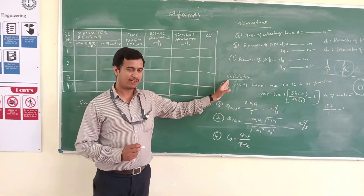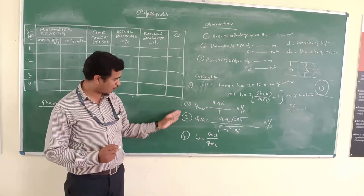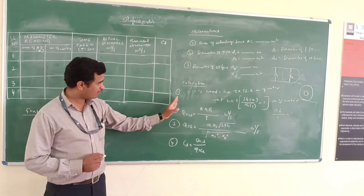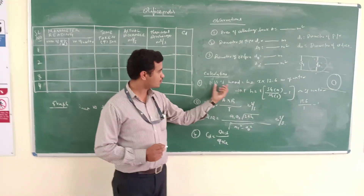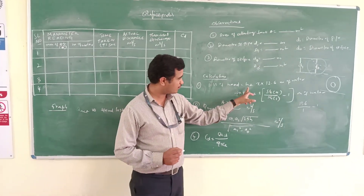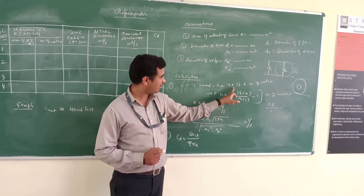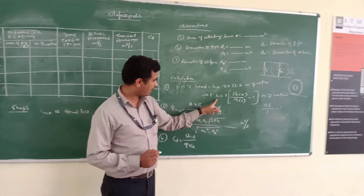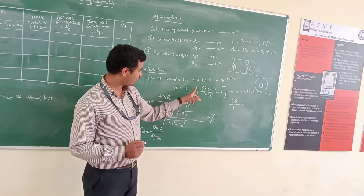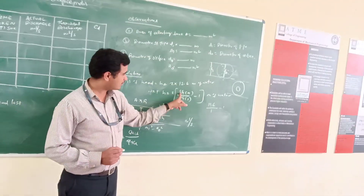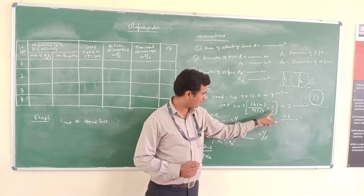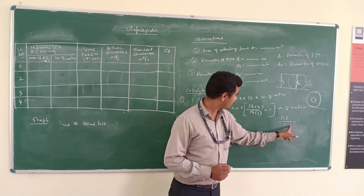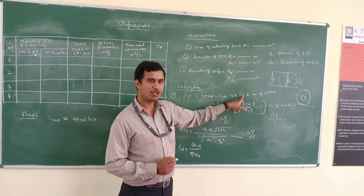The next one will be the calculation. In the calculation, we always have to follow the same procedure step by step. The first step is always to take the loss of head. The loss of head h will be equal to x into 12.6 meters of water. We know that h is equal to x multiplied by the specific gravity of mercury divided by the specific gravity of water, minus 1 — that gives 13.6 divided by 1, minus 1, which equals 12.6.